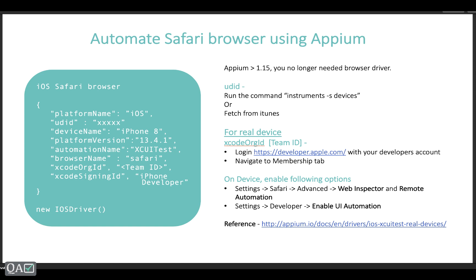There are a couple of things that are different from Chrome browser automation on Android. Looking at the capabilities required for Safari browser automation: first is platformName, which is iOS. Then UDID — this is an ID associated with each simulator or real device. To fetch the UDID, open the terminal and run `instruments -s devices`. This will list all connected iOS devices and you can get the UDID from there.